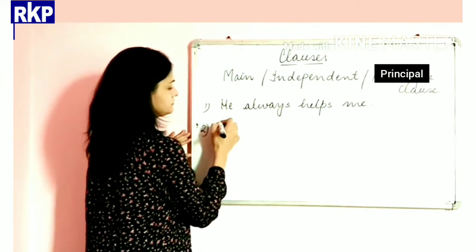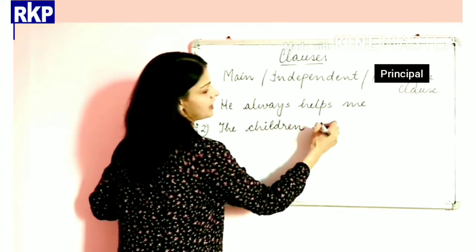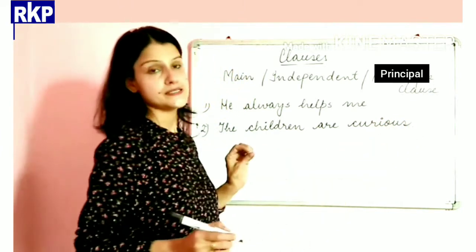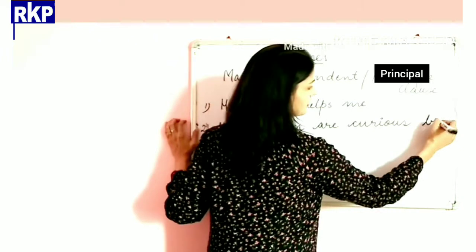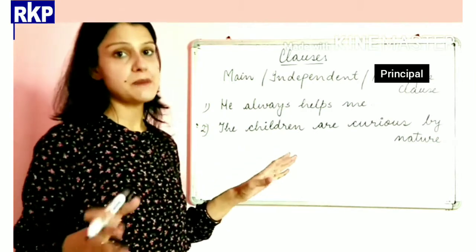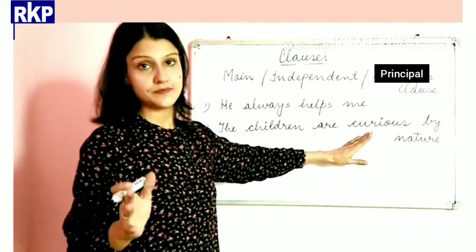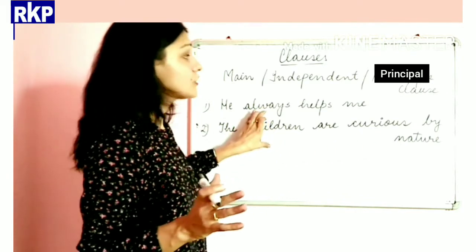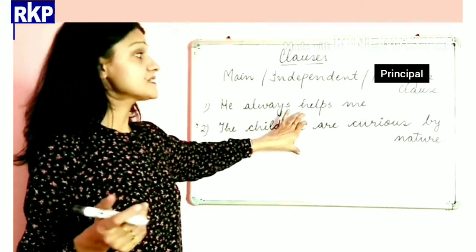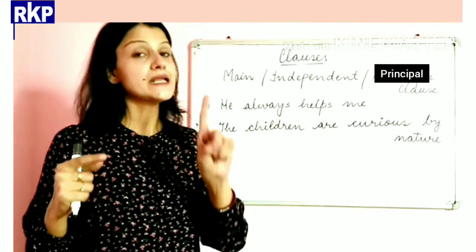Similarly, 'The children are curious by nature' — this is also made of a main clause and is a simple sentence. Both these sentences are simple sentences. A simple sentence always has one main clause.